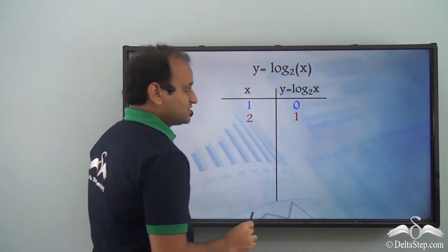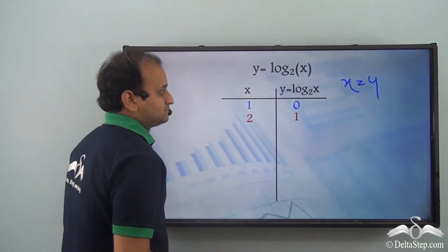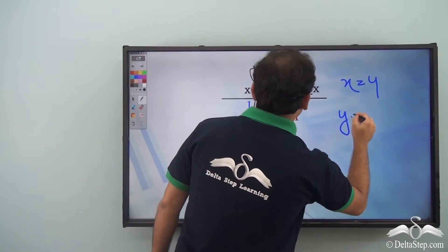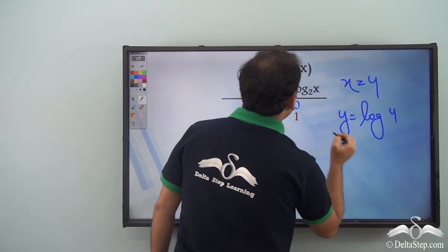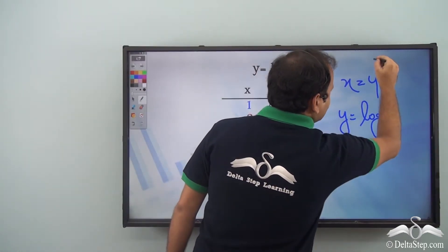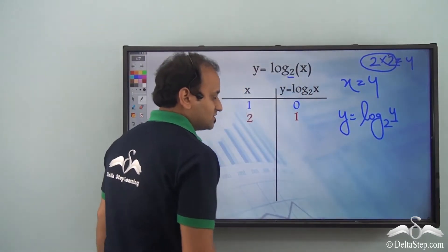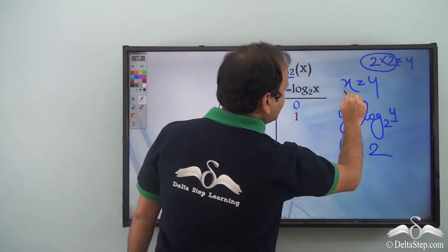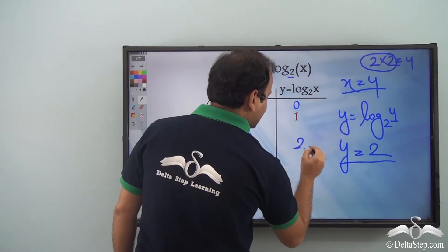Let's try another value of x. Let's take x equal to 4. Then y equals log 4 to the base 2. Now 4 can be written as a power of 2 — that is 2 into 2 equals 4, meaning 2 is multiplied 2 times. So the solution is y equals 2. When x is 4, y is 2.